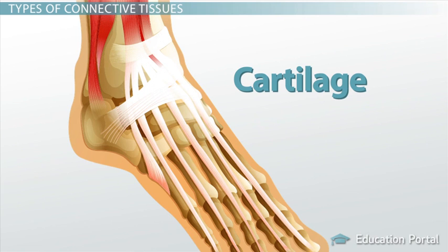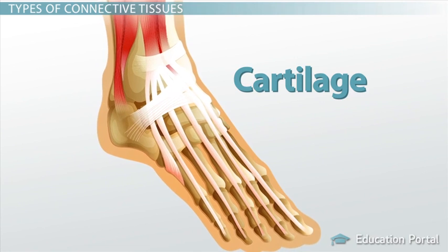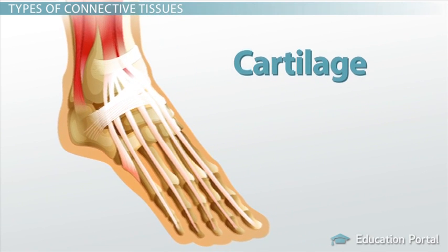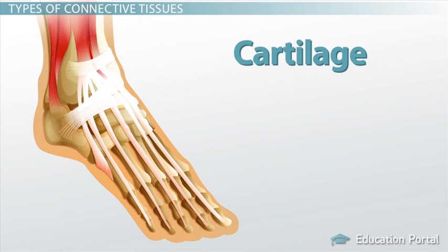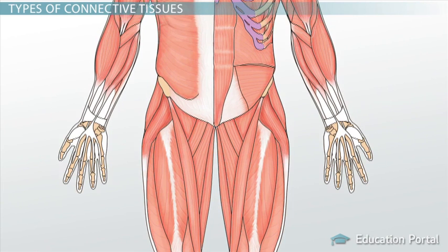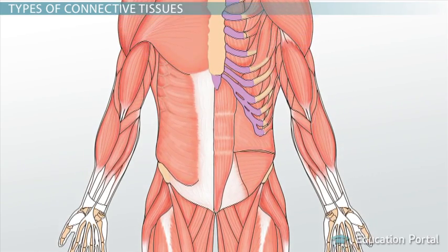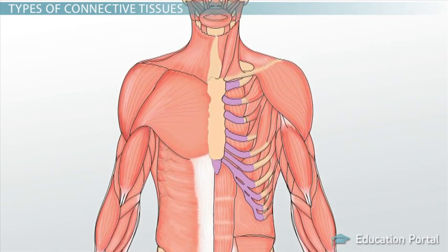Cartilage is the third type of connective tissue. Many of us are familiar with this flexible tissue that makes up our nose and ears. Cartilage is strong due to the collagen fibers within its matrix, and it is resilient due to a gel matrix. Cartilage is also found in the body as a cushion within the skeletal system.